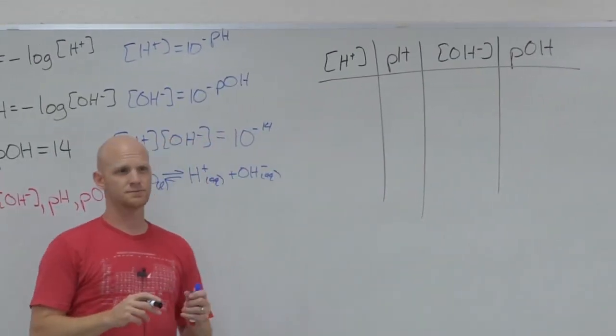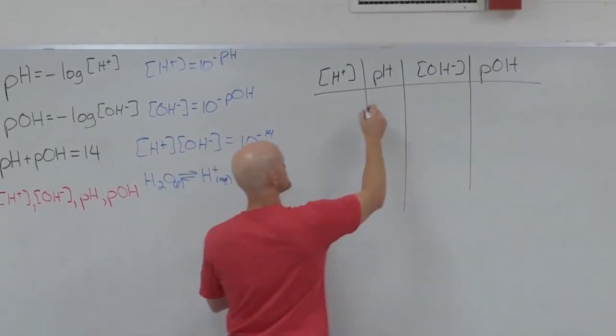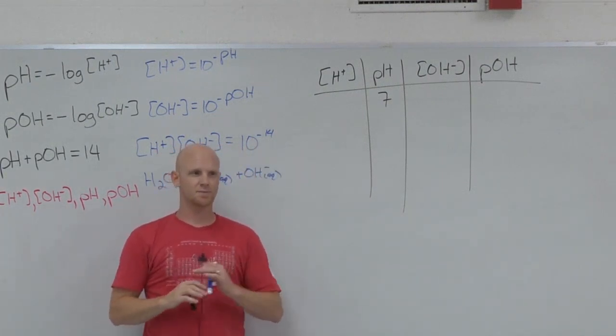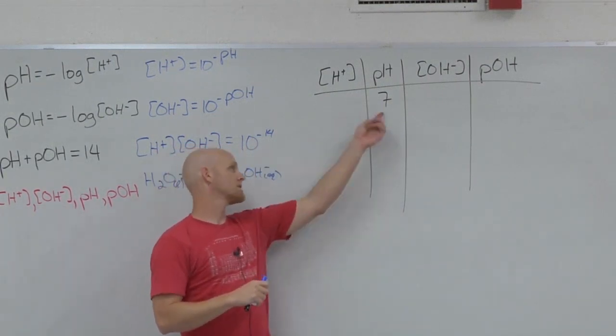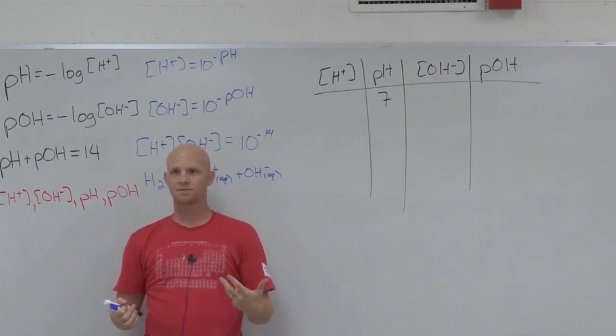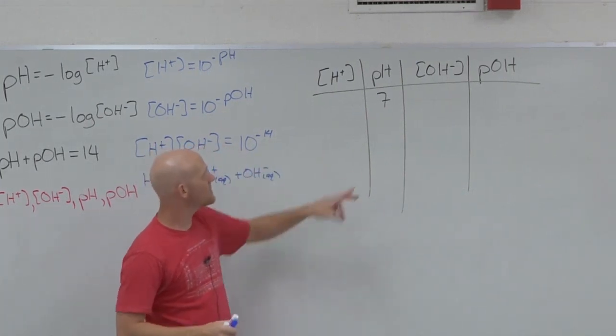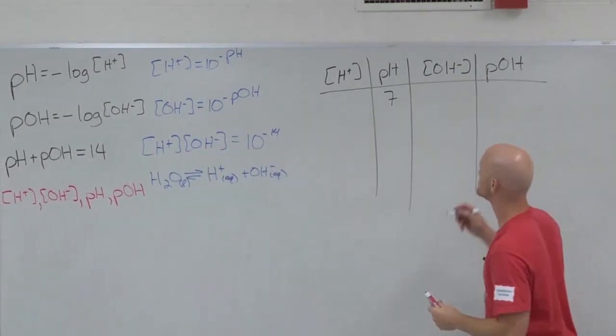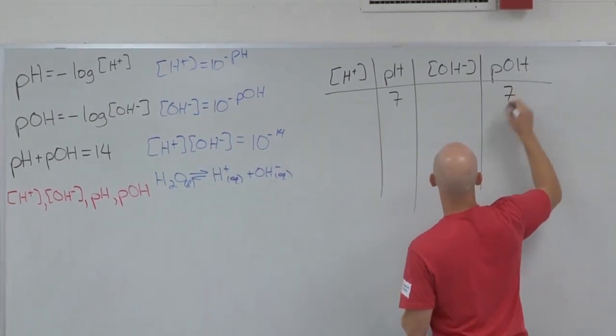So what's neutral pH? Seven. Notice if I want an acidic solution, the pH has to be lower than seven. And if I want a basic solution, the pH would have to be higher than seven. If the pH is seven, then what's the pOH? Seven, because they have to add up to 14.